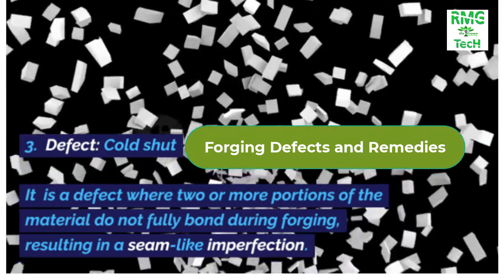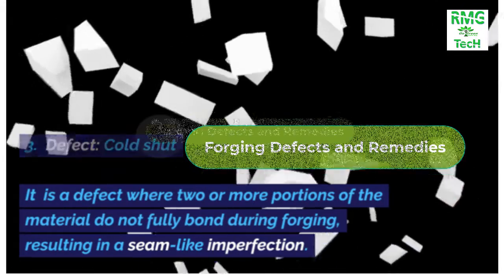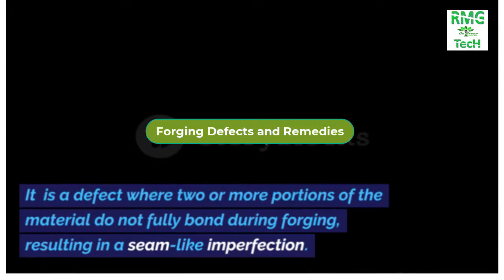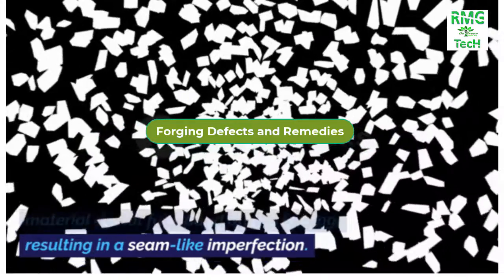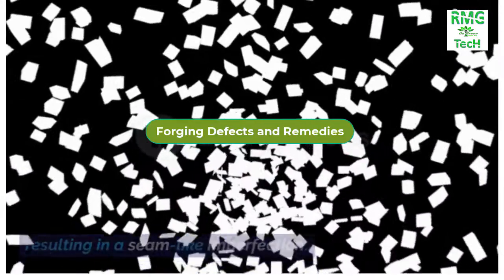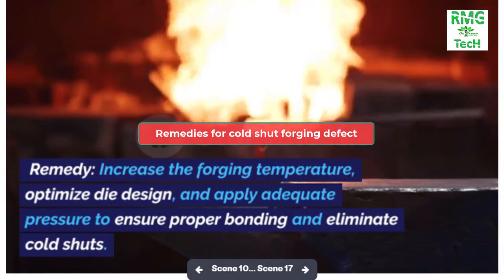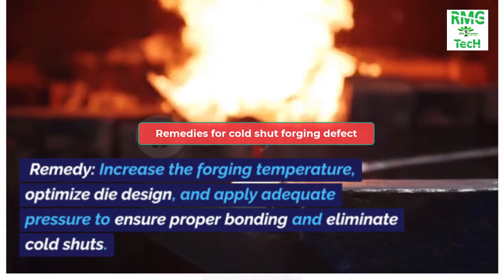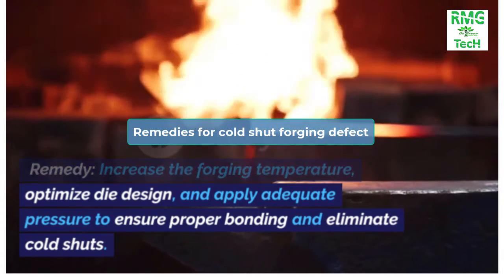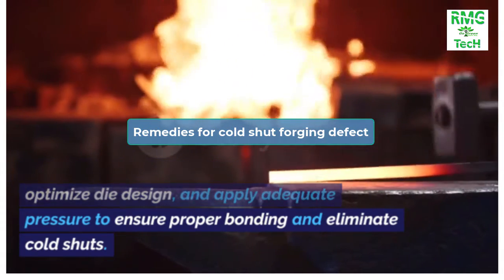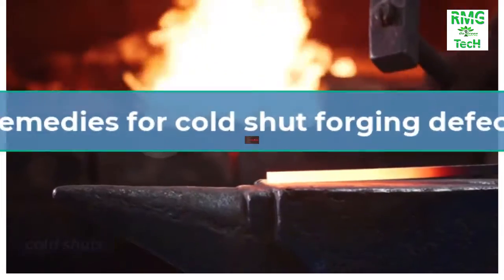Defect 3: Cold shut. It is a defect where two or more portions of the material do not fully bond during forging, resulting in a seam-like imperfection. Remedy: Increase the forging temperature, optimize die design, and apply adequate pressure to ensure proper bonding and eliminate cold shuts.